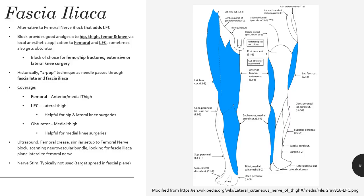Let's start looking at some of the most common lower extremity blocks. The first block is the fascia iliaca block, which has really gained traction in the last couple of years, particularly for orthopedic injuries to the femur and hip, because it provides great analgesia to that area. By adding in the lateral femoral cutaneous, you get a little bit additional coverage beyond what you'd get with a straight femoral. We typically try to do this as high as we can in the groin — with a hip injury, the higher you go, the better the analgesia because you're catching those nerves more proximal in their course. This block can also be helpful for lateral knee surgery where you may be concerned that a straight femoral would miss the lateral femoral cutaneous coverage of the knee.